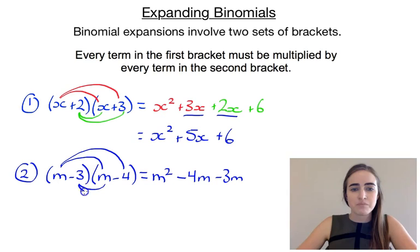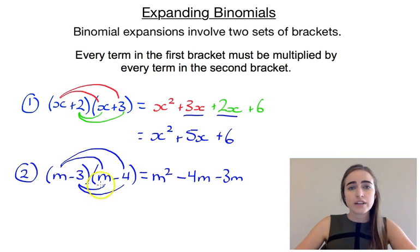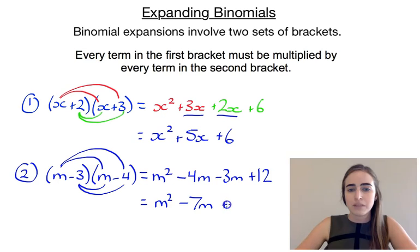And the last one is minus 3 times minus 4. Now because we've got a negative times a negative, that's going to give us a positive. And 3 times 4 is 12. So we'll have a plus 12 on the end. So simplifying, we've got our like terms of minus 4m minus 3m. That would leave us with m squared minus 7m plus 12.